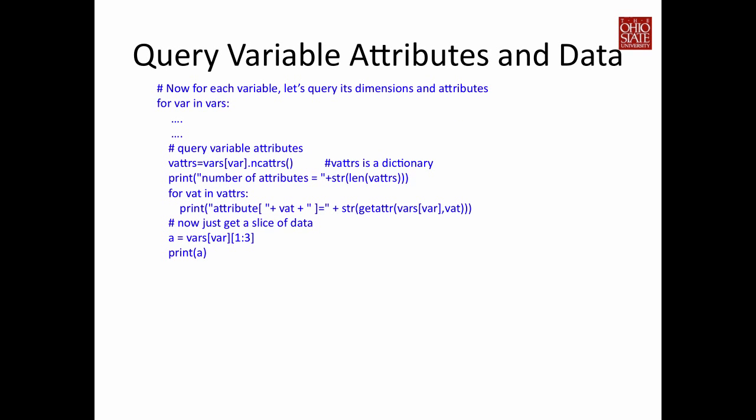For each variable there can also be some attributes associated with it. To query the attributes we use the ncattrs method, very similar to how we queried the global information. vars is a dictionary and var is the key representing a variable. We call this method and get back a dictionary returned to v_attribute. You can use len to query the number of attributes, and to get an attribute you call getattr, supplying the variable queried from the dictionary and the key.